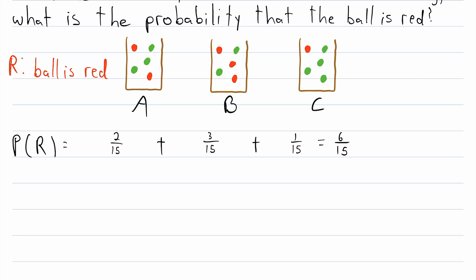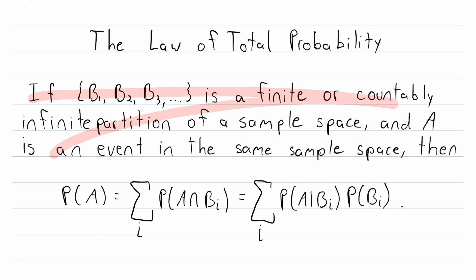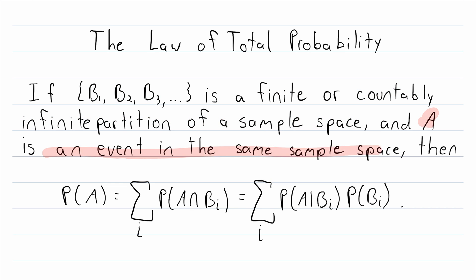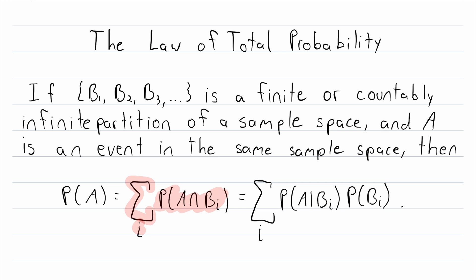The law of total probability is definitely very important, and this is a nice easy example to introduce it. Here is the law in more general terms: if we have a finite or countably infinite partition of a sample space into sets B1, B2, B3, and so on, and A is an event in the same sample space, then the probability of A can be found by summing the probability of the intersection of A with each of those sets. We can also replace that intersection probability with a conditional probability multiplied by the probability of the given condition, and the sum notation means to add this up for every value of i.